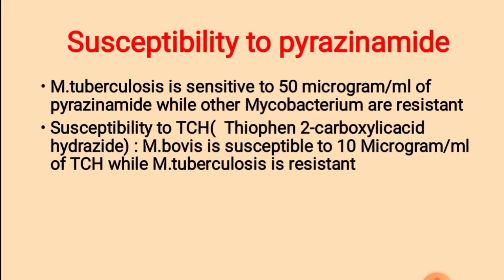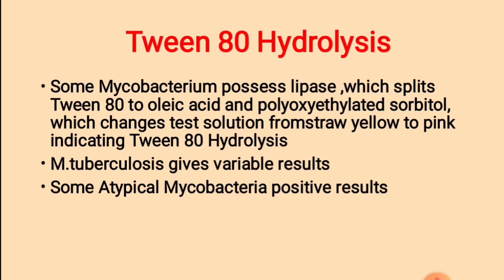Susceptibility to pyrazinamide: Mycobacterium tuberculosis is sensitive to 50 µg/ml of pyrazinamide, while other mycobacteria are resistant. Susceptibility to TCH (thiophen-2-carboxylic acid hydrazide): Mycobacterium bovis is susceptible to 10 µg/ml of TCH, while Mycobacterium tuberculosis is resistant. Tween 80 hydrolysis: some mycobacteria possess lipase which splits Tween 80 into oleic acid and polyoxyethylated sorbitol, changing the test solution from straw-yellow to pink — indicating a positive Tween 80 hydrolysis test. Mycobacterium tuberculosis gives a variable result; some atypical mycobacteria give a positive result.